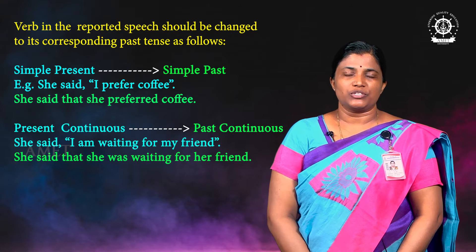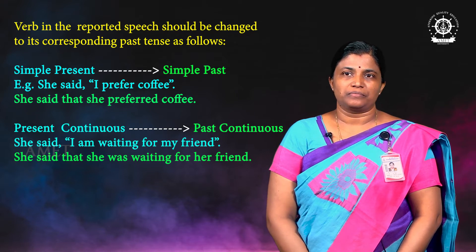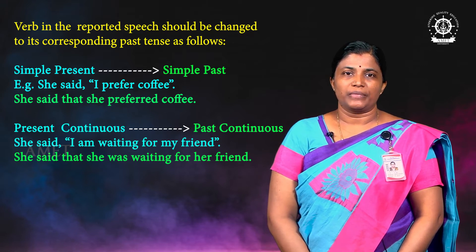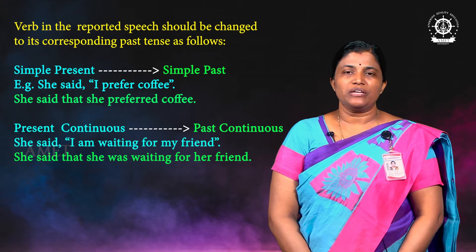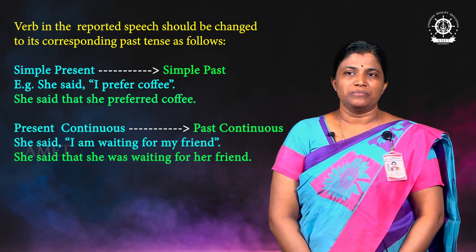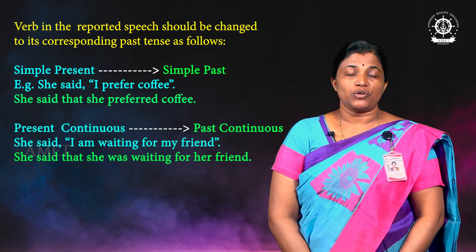Present continuous should be changed into past continuous. For example: 'She said I'm waiting for my friend' should be converted into 'She said that she was waiting for her friend.' Note the change of tense. We have quite a number of other changes also — we will see them later. First let us fix our mind on the tense change.